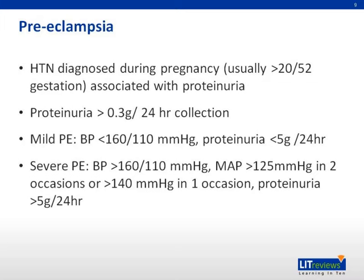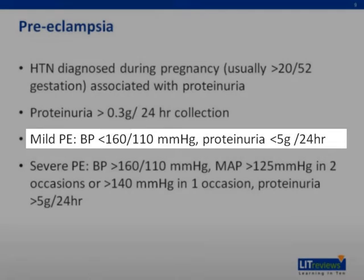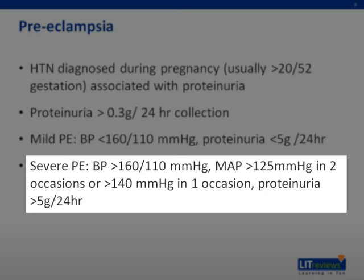Preeclampsia is hypertension diagnosed during pregnancy, usually more than 20 weeks gestation, in the presence of proteinuria. Proteinuria is defined as urine protein levels of more than 0.3 grams in a 24-hour urine collection. Mild preeclampsia is when the blood pressure is less than 160 systolic over 110 diastolic. Severe preeclampsia is when the blood pressure is more than 160 systolic over 110 diastolic, and the mean arterial pressure is more than 125 millimeters of mercury on two occasions, or more than 140 on a single occasion.